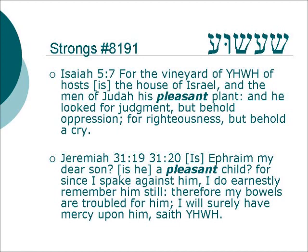Isaiah 5:7: 'For the vineyard of Yahweh of hosts is the house of Israel, and the men of Judah his pleasant plant. And he looked for judgment, but behold oppression. For righteousness, but behold a crime.' Jeremiah 31:19: 'Is Ephraim my dear son? Is he a pleasant child? For since I spake against him, I do earnestly remember him still. Therefore my bowels are troubled for him. I will surely have mercy upon him, saith Yahweh.'